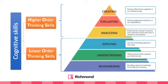Let's apply Bloom's Taxonomy to the nutrition topic. Remembering would be recalling vocabulary related to nutrition and the food groups — carbohydrates, protein, oils and fats, etc. Understanding would be making sense of the material by answering questions. Application would be using the knowledge in new ways — for example, given a blank plate, students draw the perfectly balanced nutritional plate.